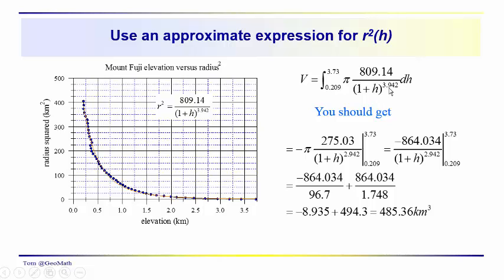For the definite integration we have minus pi times 275.03 over 1 plus H to the 2.942 power. So you know this is 1 plus H to the minus 3.942 power. We know that in integration the power is increased by 1 and then we divide by the new power. So we get 2.942 and then we divide 809.14 by 2.942 to get 275.03. And then we're evaluating over these limits. So we have this representation here and I've just carried through multiplication by pi. You should get something that looks like this. We get minus 864 over 96.7 plus 864 over 1.748. And that gives us a volume of about 485.36 cubic kilometers.